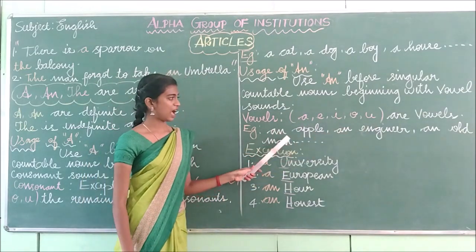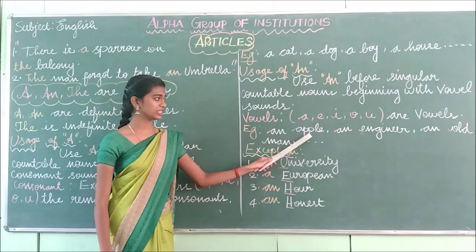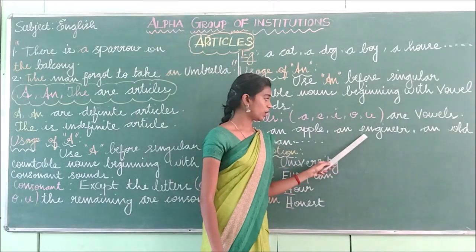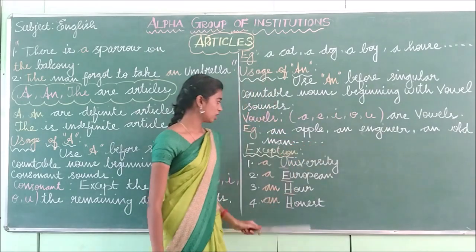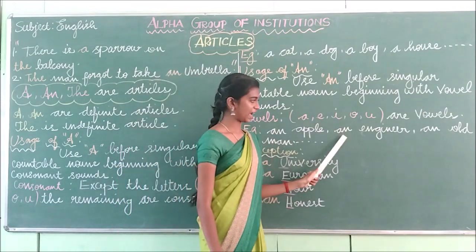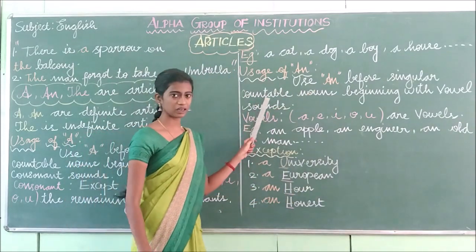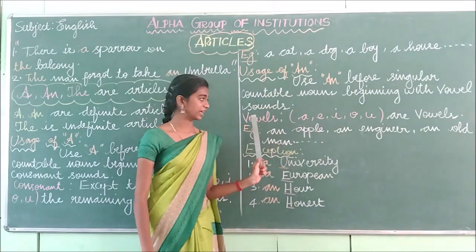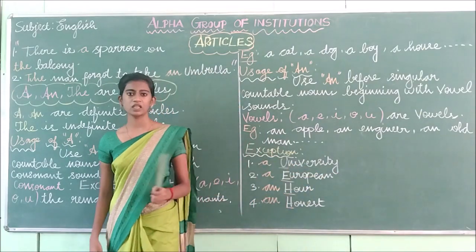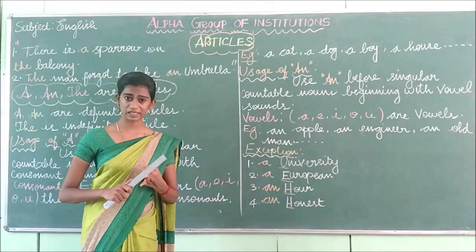Look at the examples: an apple, an engineer, an old man. Apple starts with the vowel sound A. Engineer starts with the vowel sound E. Old man starts with the vowel O. So when a word starts with a vowel sound, we use the article 'an'.